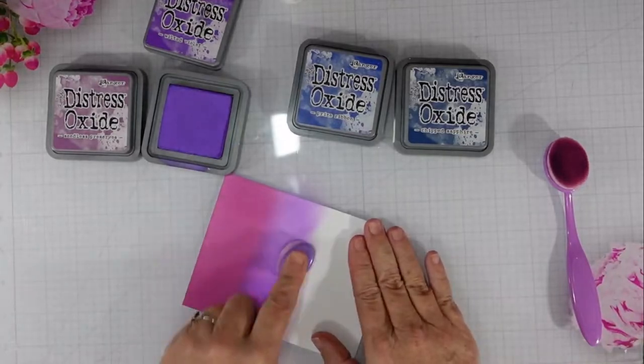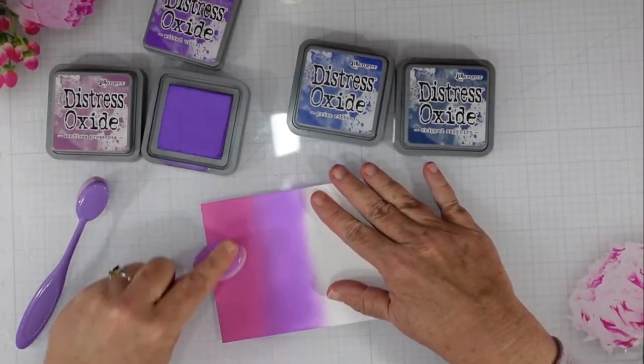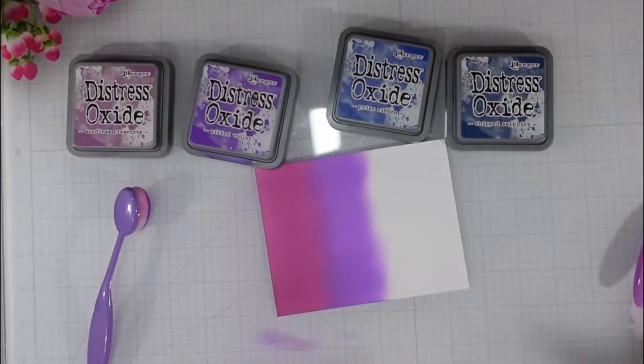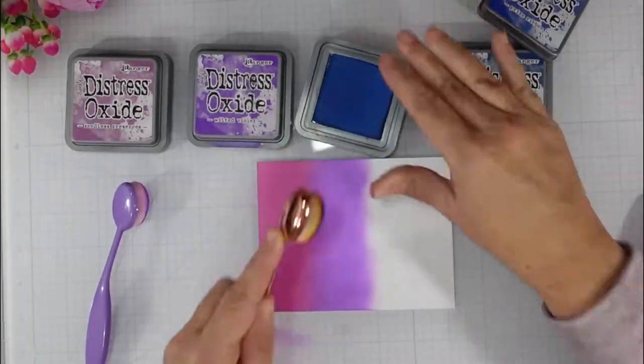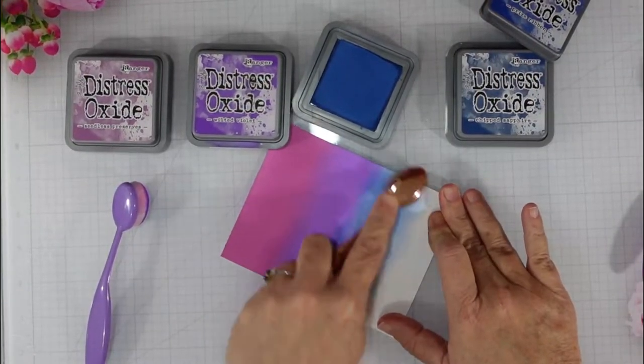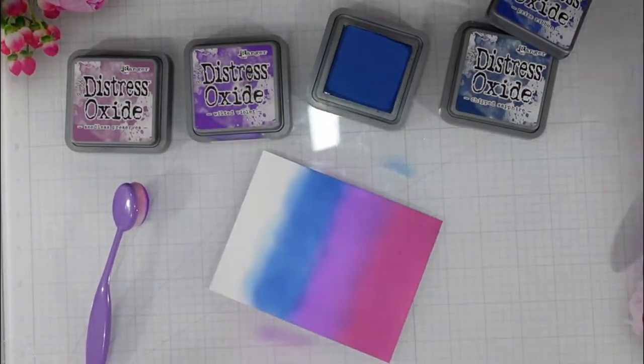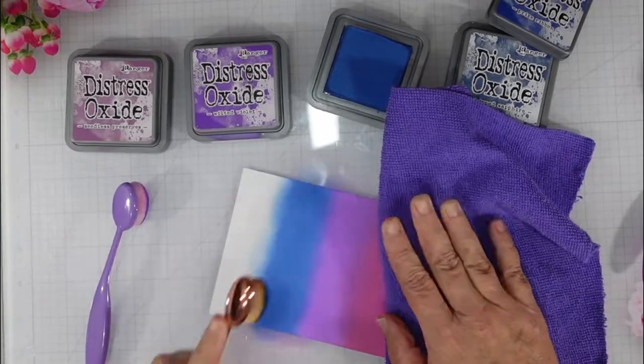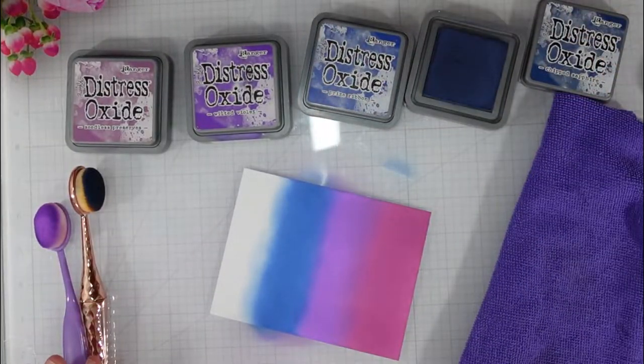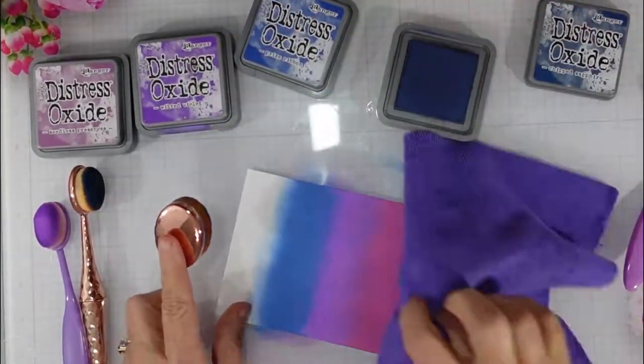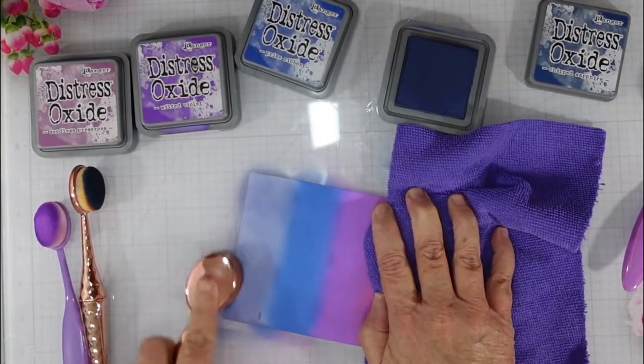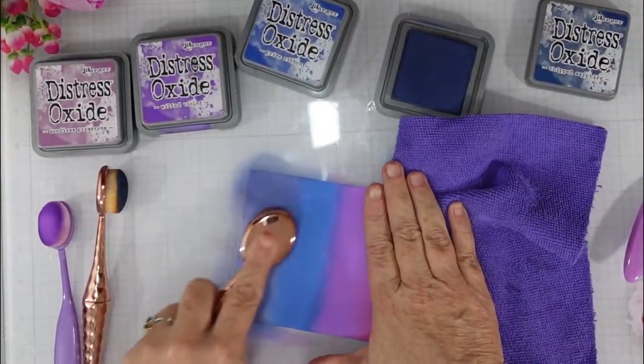The first color that I started with was called Seedless Preserves. As you can see, I'm mixing between the Seedless Preserves and the Wilted Violet. That will help smooth out the transition between the oxide inks. This third color is Prizm Ribbon, and then I will finish off with Blueprint Sketch.